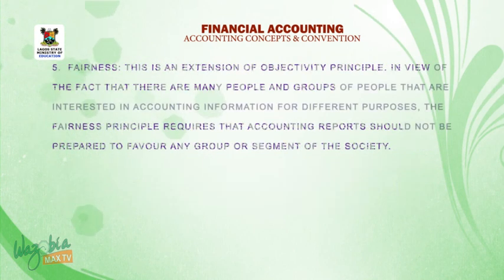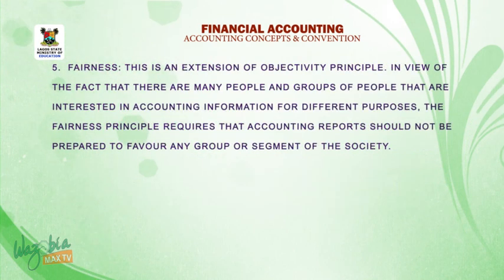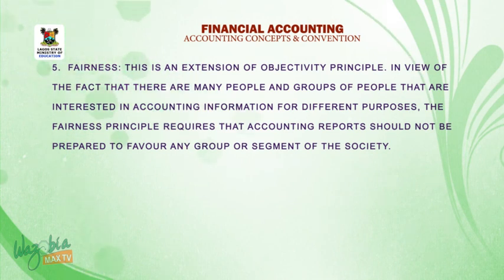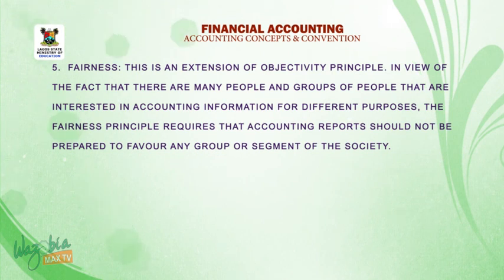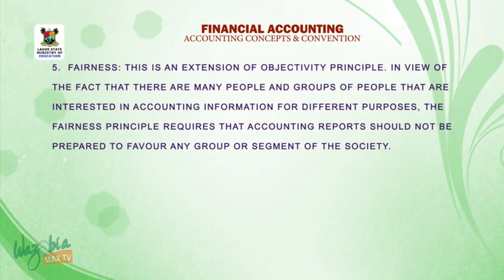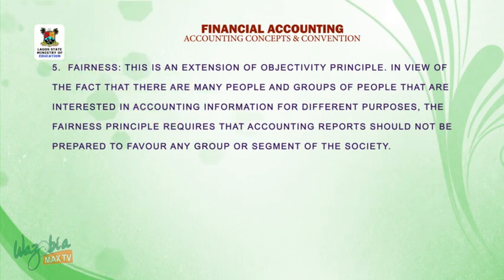Number five, fairness. This is an extension of the objectivity principle. In view of the fact that there are many people and groups of people that are interested in accounting information for different purposes, the fairness principle requires that accounting reports should not be prepared to favor any group or segment of the society.